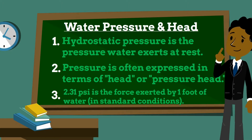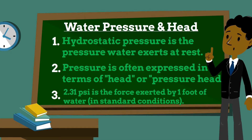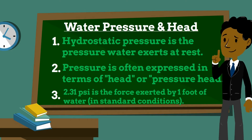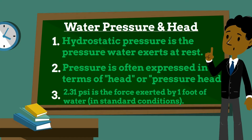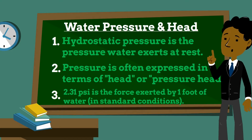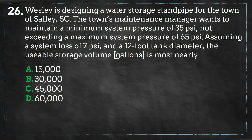This constant comes from the following: a square foot of area equals 144 square inches, and a cubic foot of ambient temperature water weighs 62.4 pounds. So if you pour one pound of water into a container occupying one square inch of floor space, that water would be 2.31 feet high.